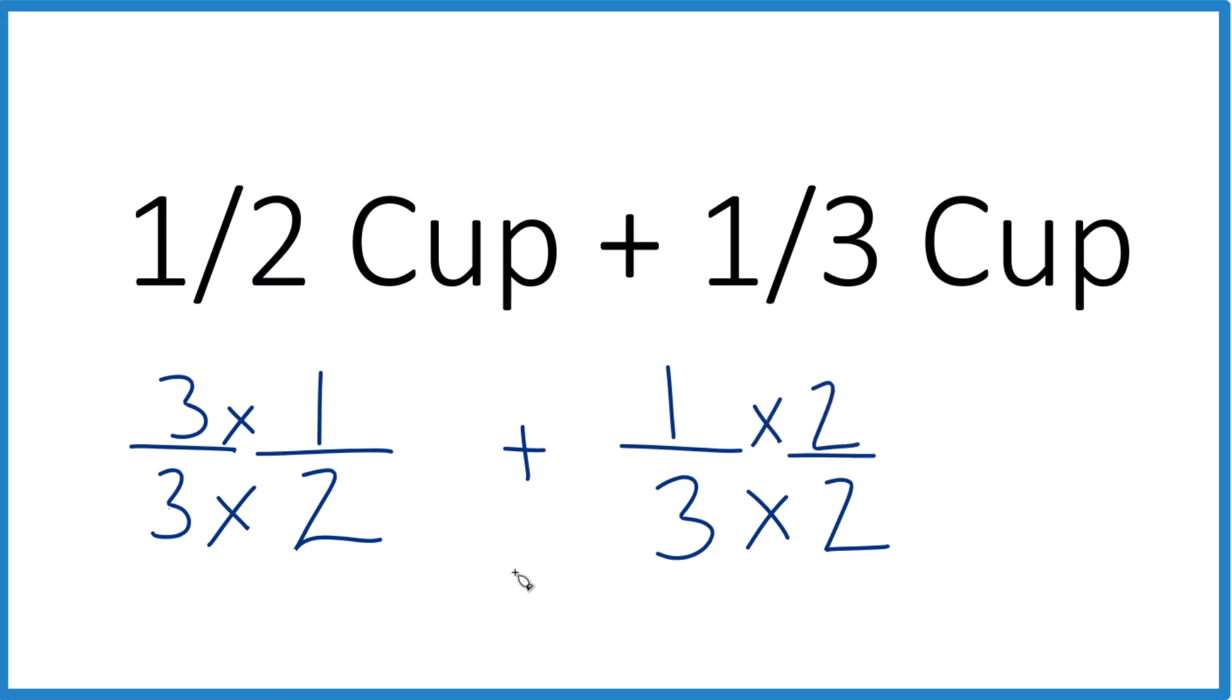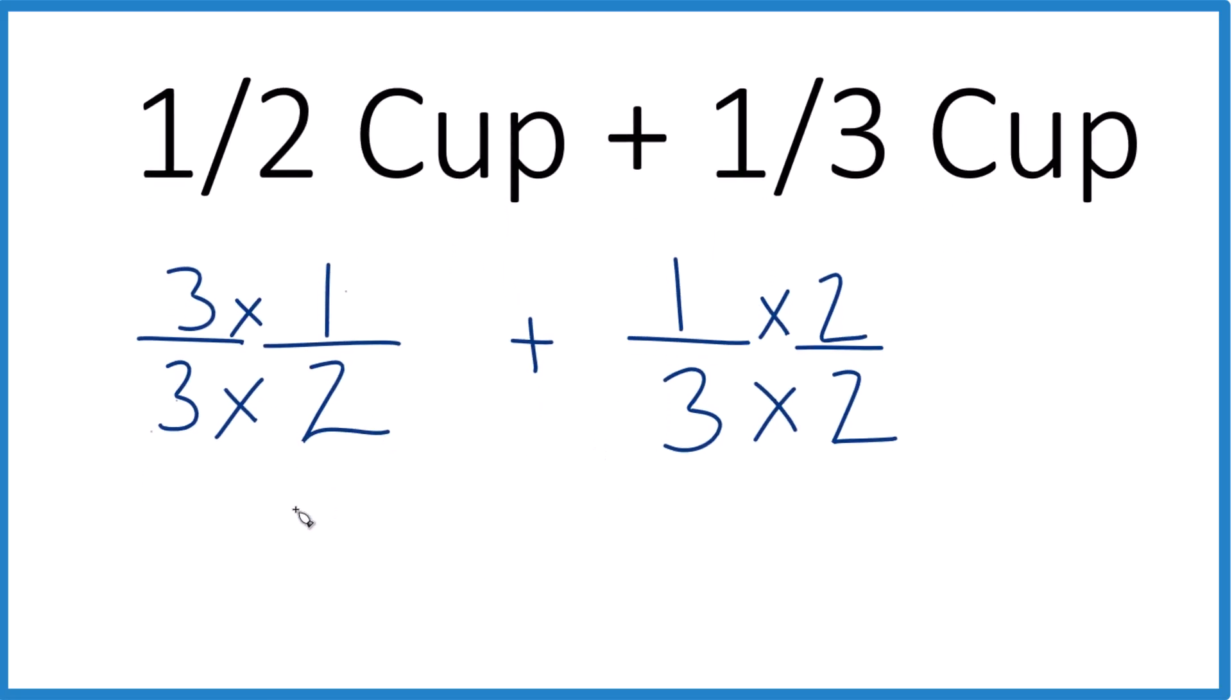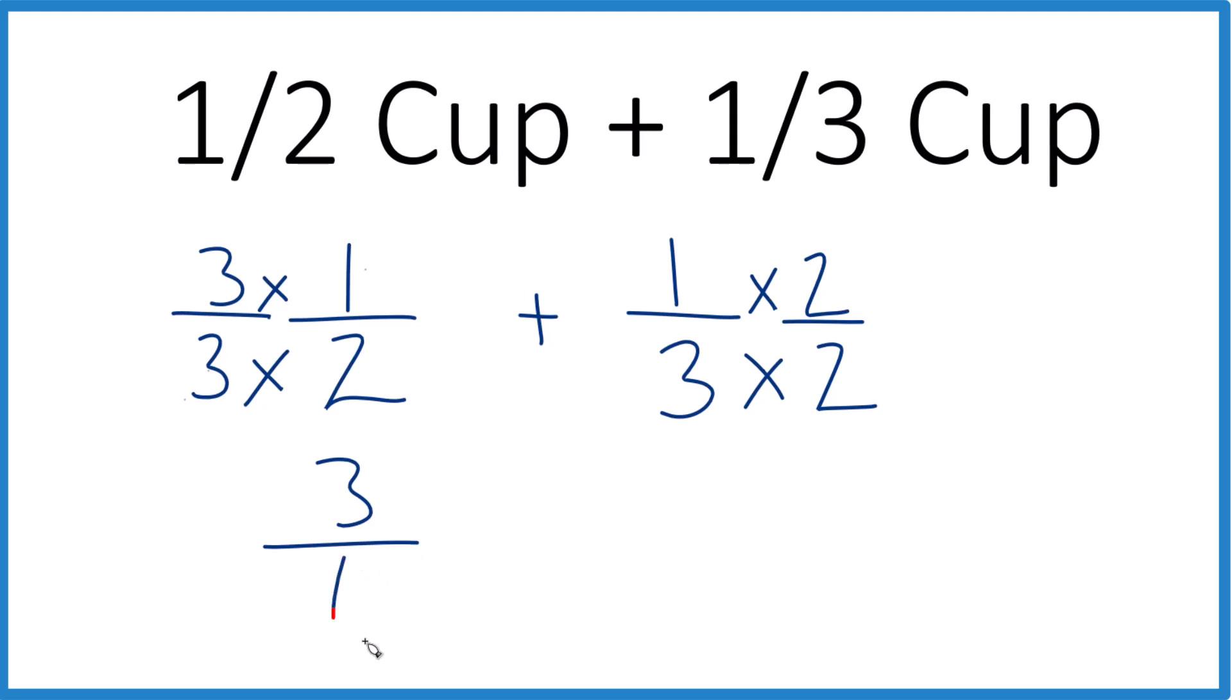So we didn't really change anything. We're just changing the way it looks, because 3 times 1 is 3, 3 times 2 is 6. So you get 3/6. That's the same as 1/2. Plus 1 times 2 is 2, 3 times 2 is 6.